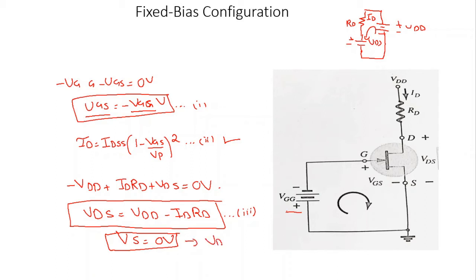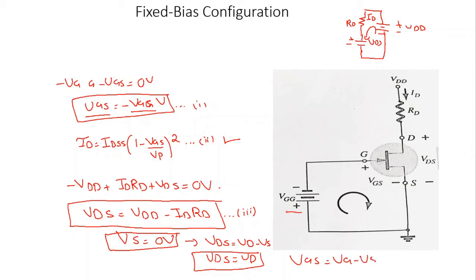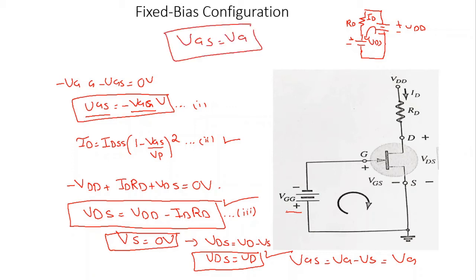Since the source is grounded, the source voltage is zero. Simplifying the KVL equation gives VDS = VDD − ID·RD. This was the mathematical approach for the fixed bias configuration.